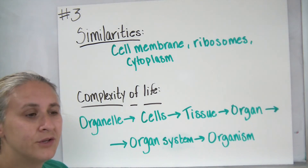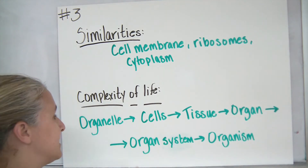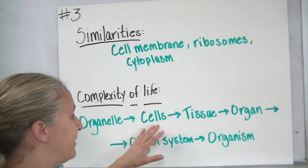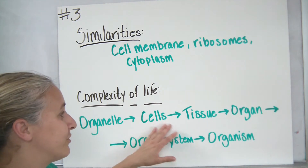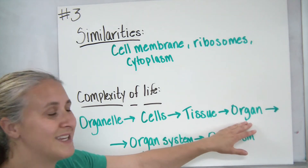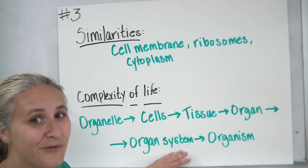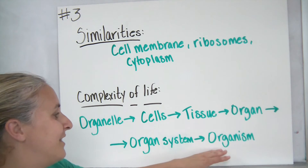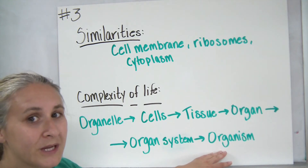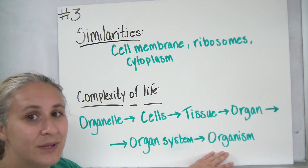In terms of complexity, we like to talk about things from the least complex to the most complex in terms of organization. The smallest thing inside of a cell is the organelle. The next largest would be cells. A group of cells working together to perform a job is a tissue. A group of tissues working together is an organ. A group of organs working together is an organ system. Those organ systems working together to maintain balance make up an organism. So the least complex is the organelle; the most complex is the organism.